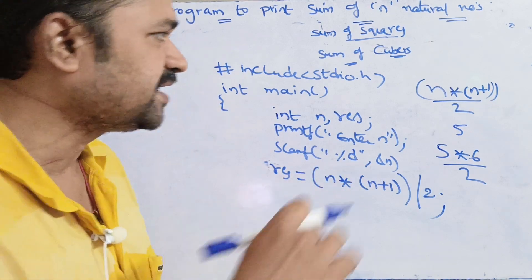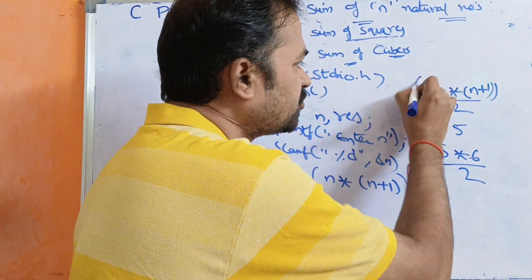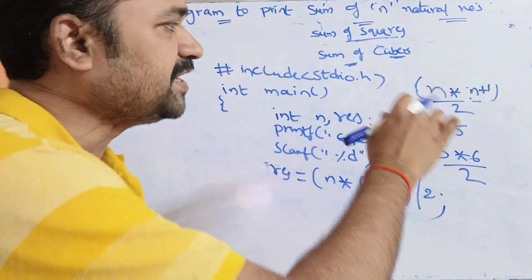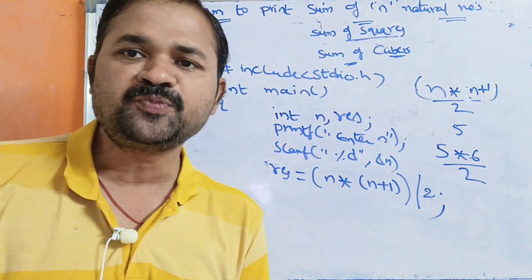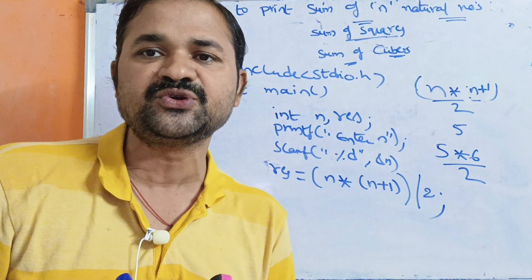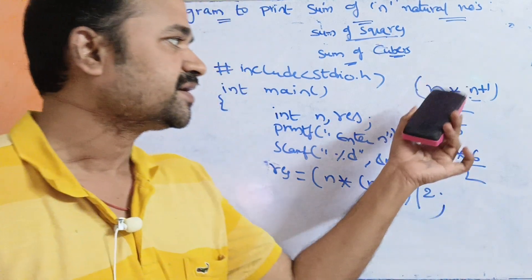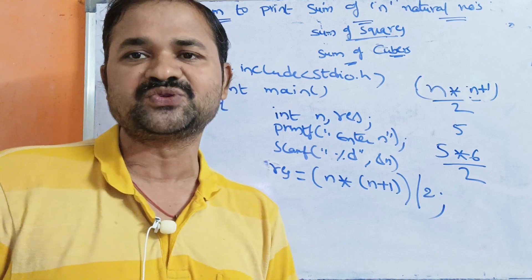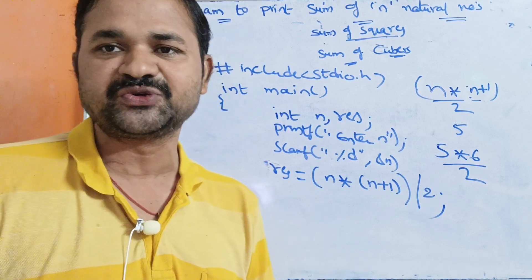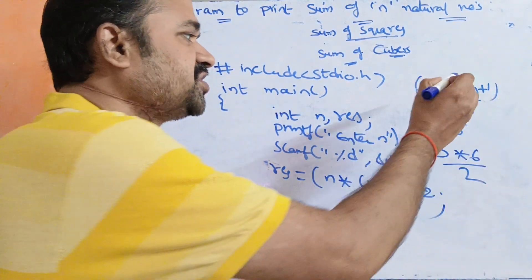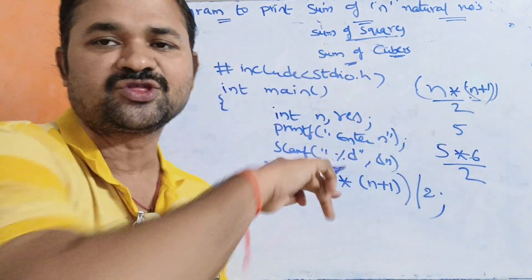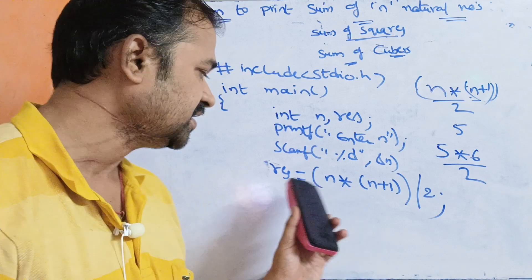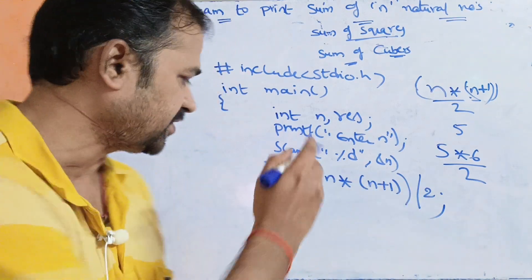Now let us write the formula. res is equal to n into (n+1) divided by 2.